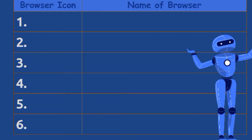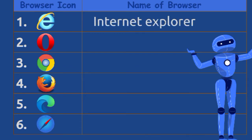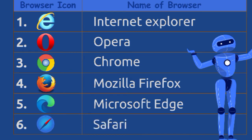Now, let's try to identify the different browsers and the name of each browser. Number one is Internet Explorer. Number two is Opera. Three, Chrome. Four, Mozilla Firefox. Five, Microsoft Edge. And number six, Safari.